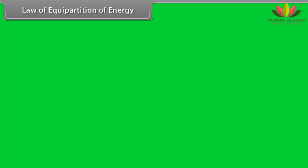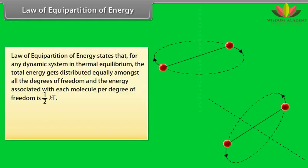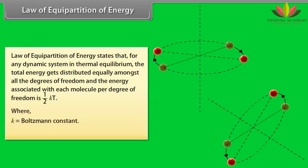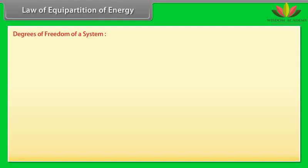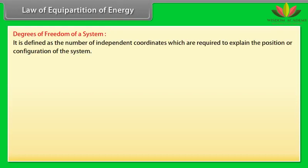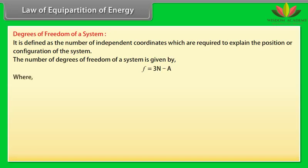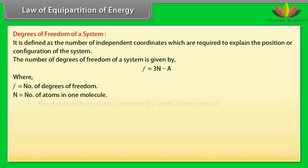Law of equipartition of energy. Law of equipartition of energy states that for any dynamic system in thermal equilibrium, the total energy gets distributed equally amongst all the degrees of freedom, and the energy associated with each molecule per degree of freedom is half KT, where K is equal to Boltzmann's constant, T is equal to absolute temperature of the system. Degree of freedom of a system is defined as the number of independent coordinates which are required to explain the position or configuration of the system. The number of degrees of freedom of a system is given by F is equal to 3N minus A, where F is equal to number of degrees of freedom, N is equal to number of atoms in one molecule, A is equal to number of independent relations between the atoms of one molecule.